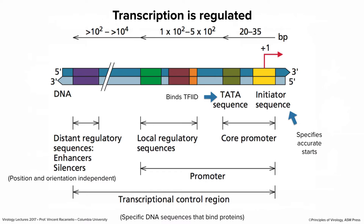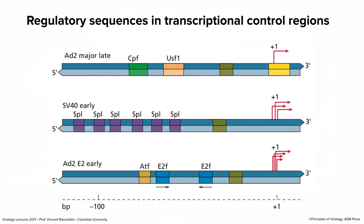Here is a slide comparing three different viral promoters or transcriptional control regions, from +1 to about 100 base pairs away. Adenovirus has a major late promoter — the word 'late' means it's active late in adenovirus infection, and we'll talk today about why. The SV40 early promoter has three distinct start sites. The adenovirus early promoter has a number of different start sites as well, plus binding sites for regulatory proteins like CPF, USF1, SP1, and E2F — don't memorize these, just know they're transcriptional regulatory proteins.